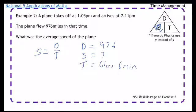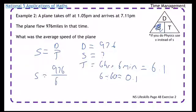Okay, so this time we're going to take 6. We're going to divide it by 60 to work out what it is as a decimal hour. And it's 0.1. So 6 hours and 6 minutes is 6.1 hours. Then you just take the speed and divide 976 by 6.1, which gives you a speed of 160 miles per hour.